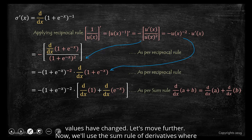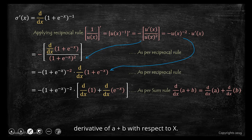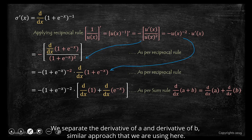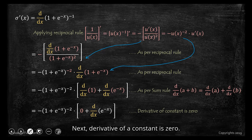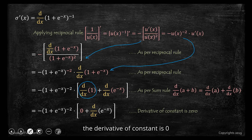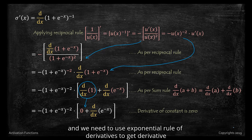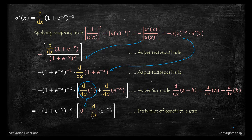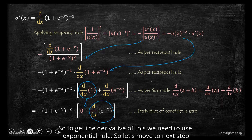Now we will use the sum rule of derivatives, where the derivative of a plus b with respect to x separates into the derivative of a and the derivative of b — the same approach we are using here. Next, the derivative of a constant is 0, so the derivative of the constant term is 0. We then need to use the exponential rule of derivative to get the derivative of e raised to minus x — I am marking this on screen.